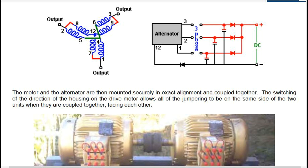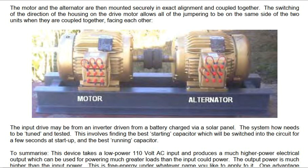The motor and the alternator are then mounted securely in exact alignment and coupled together. The switching of the direction of the housing on the drive motor allows all of the jumpering to be on the same side of the two units when coupled together, facing each other. The input drive may be from an inverter driven from a battery charged via a solar panel. The system then needs to be tuned and tested, involving finding the best starting capacitor — switched into the circuit for a few seconds at start-up — and the best running capacitor. This device takes a low-power 110-volt AC input and produces a much higher power electrical output which can be used for powering much greater loads than the input could power.